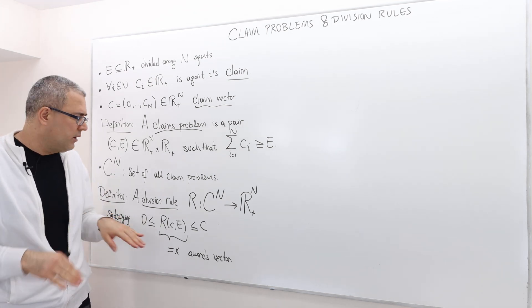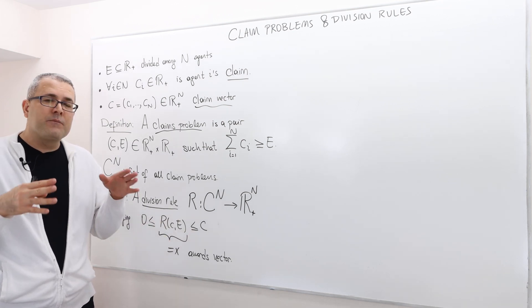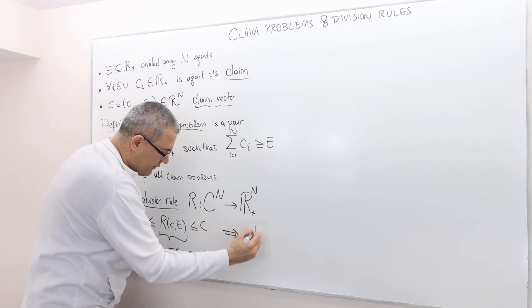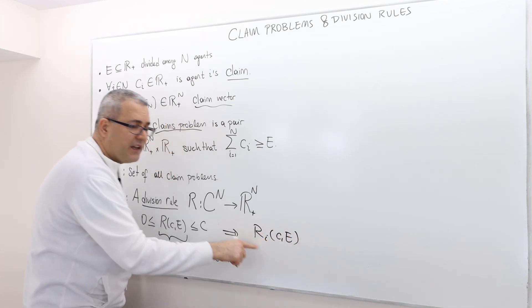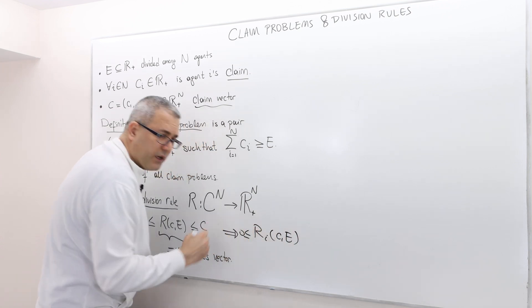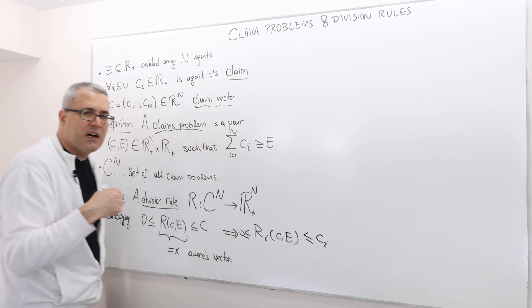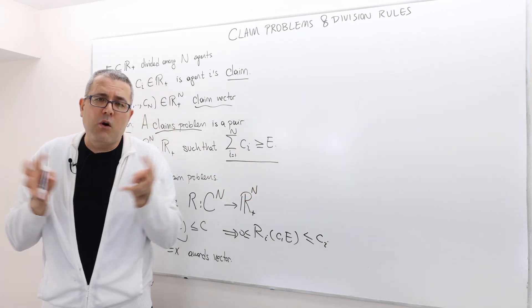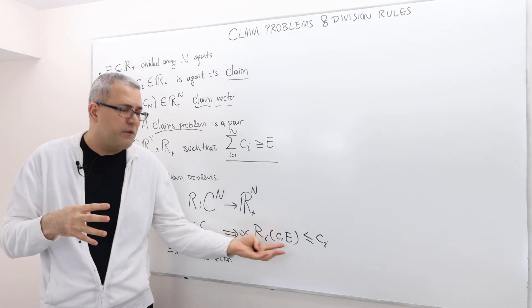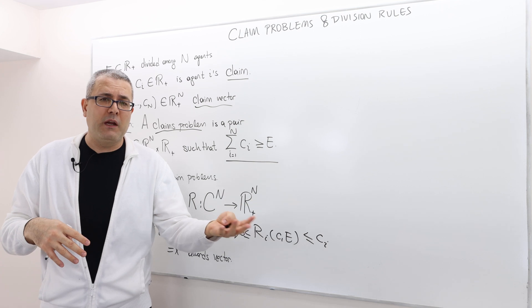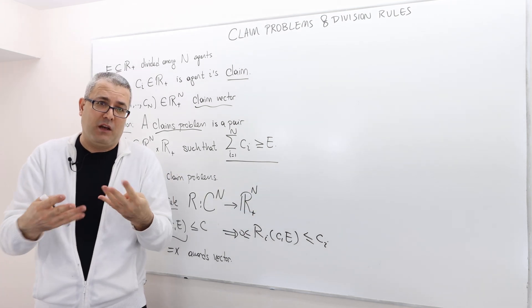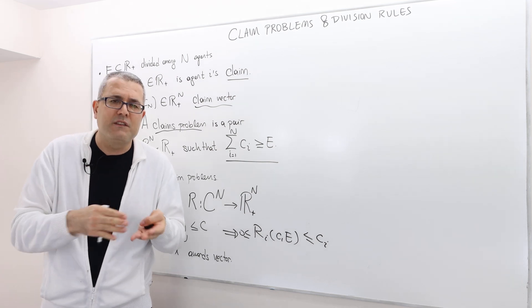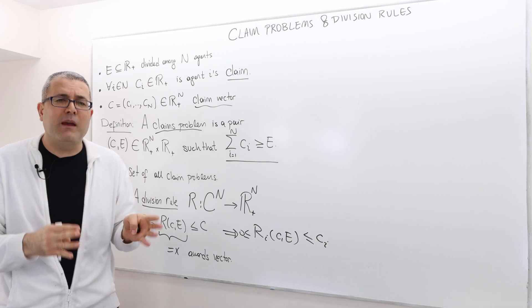The second thing is that nobody should get more than his or her claim. So don't forget, this inequality implies that RI, C, E. So this is the Ith individual award is going to be greater than or equal to 0 and also less than or equal to CI, his own claim. So nobody gets more than his claim. Well why is that so? Don't forget, the total claim is already bigger than the surplus. And if you allow some rule, distribute this money to some agents getting more than their claim, but some other agents obviously can't get up to their claim, well that's awkward. That's weird. I mean, you shouldn't give some agents more than what he wants.